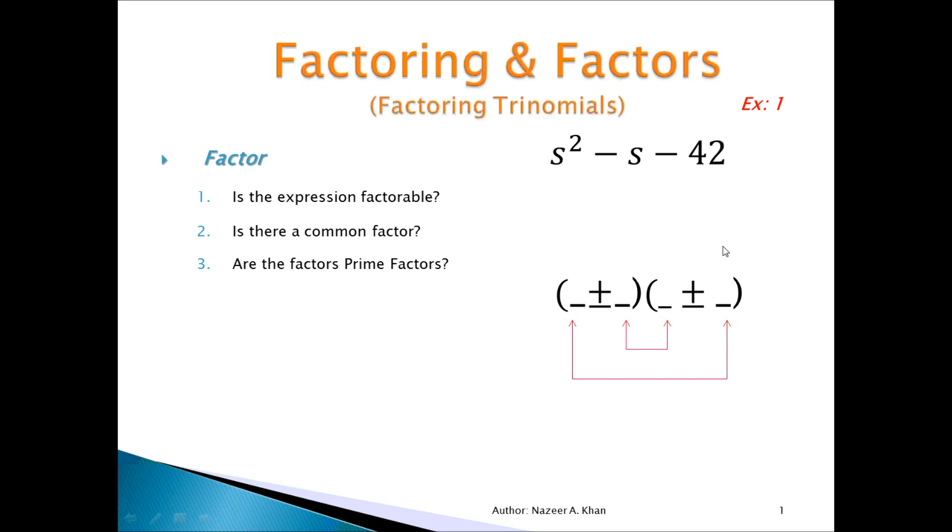The next thing that we have to look at is the coefficient of the A term and the coefficient of the C term. We have to get factors to place into these positions, and for the A term, the factors will go into the first position of the binomial, and for the C term, it will go into the second position of the binomial. When we look at the factors, there's only one set of factors for your A term. It is S times S, or 1S times 1S.